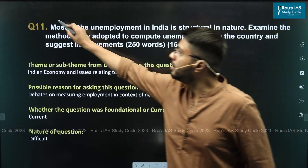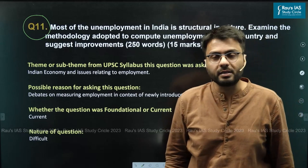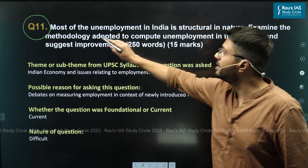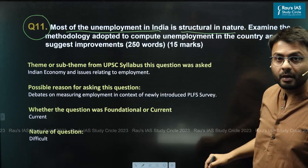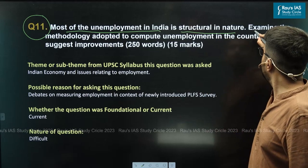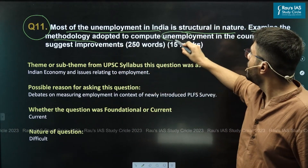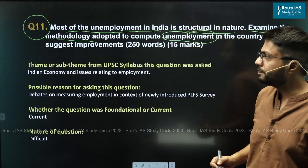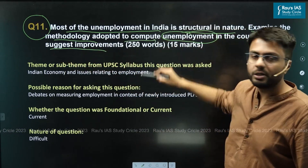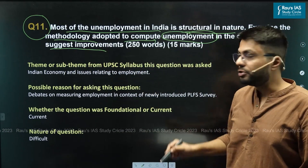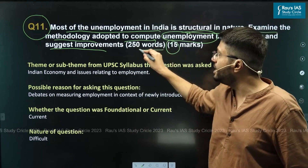Let us discuss question number 11 that appeared in GS paper 3 of this year's MAINS examination. The question states that most unemployment in India is structural in nature. It also asks us to examine the methodologies adopted to estimate the number of unemployed in the economy, and to suggest improvements in these methodologies. This is a 15 marker question, so you have to answer it in 250 words.